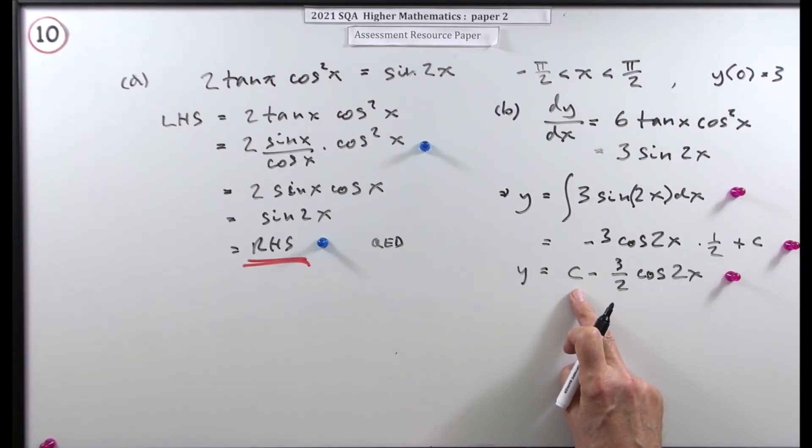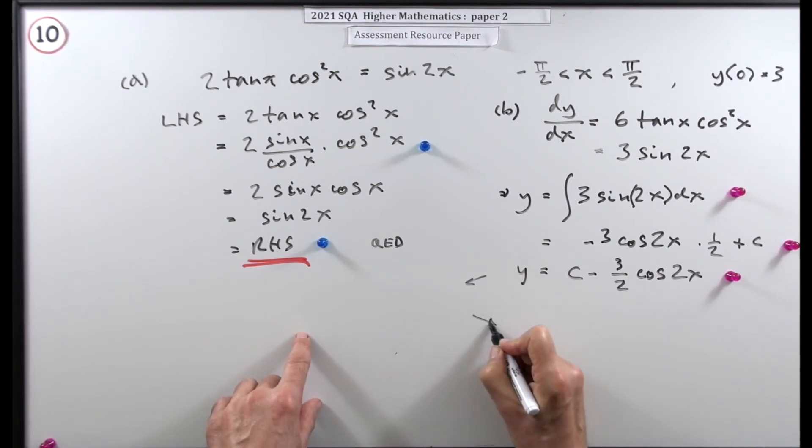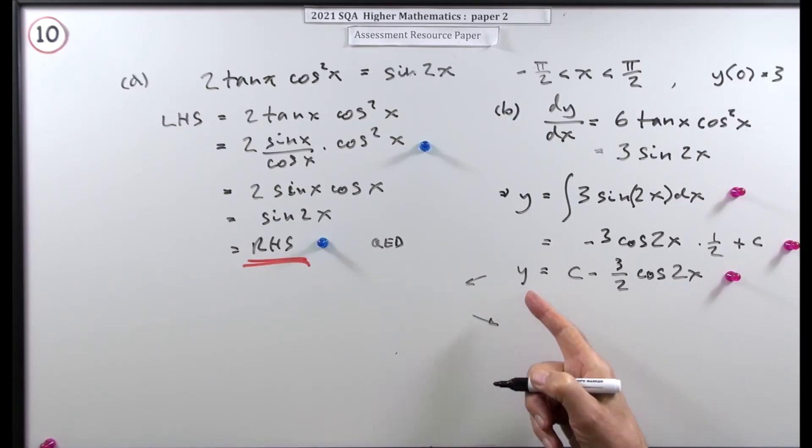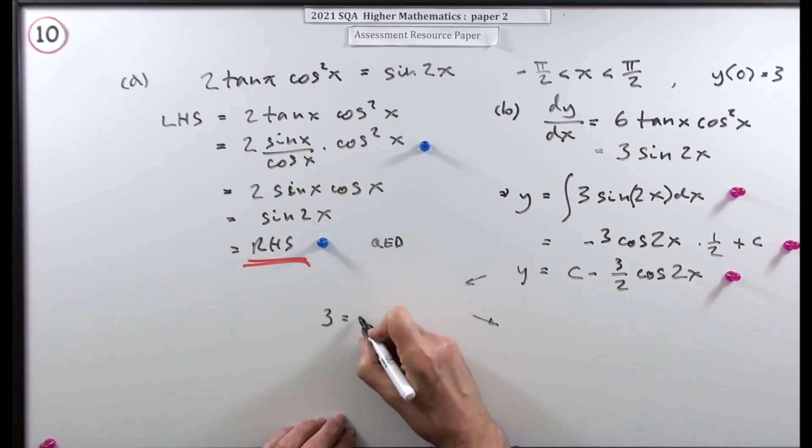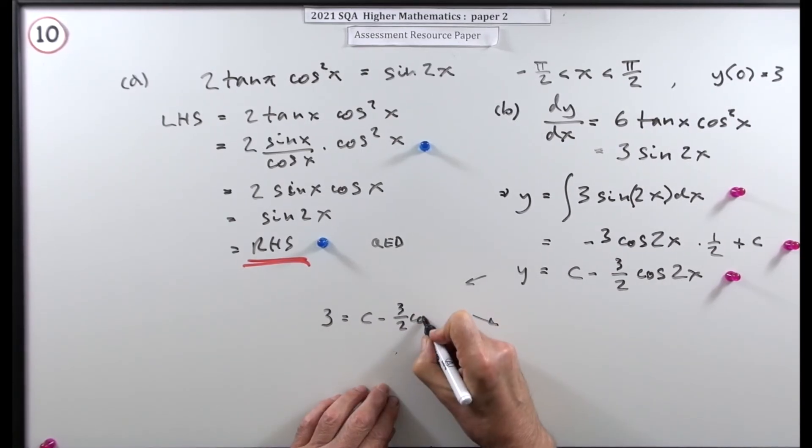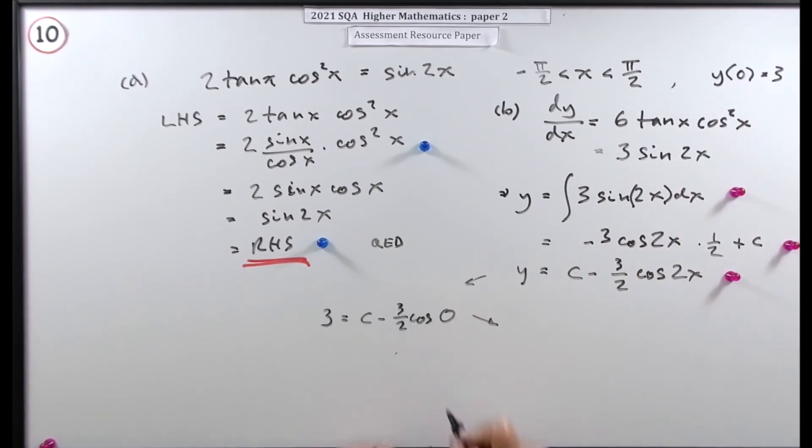But you can find what this c is because you've got a connection. I'll pop over here to do it and then come back in so I don't spoil the flow. So this says that y is equal to 3. So that'll be c minus 3 upon 2 cos when x is 0. Well two zeros are 0. Now that's quite handy because the cos of 0 is 1.